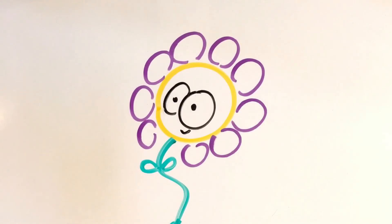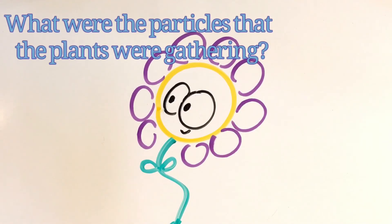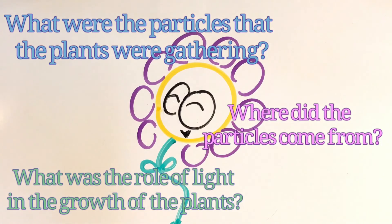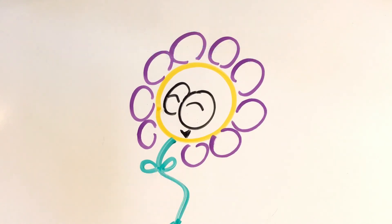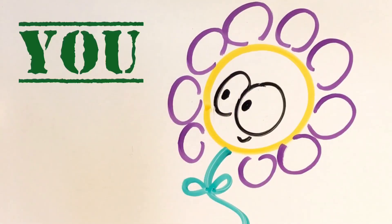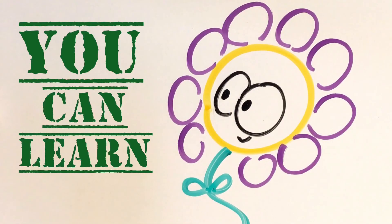Here are a few questions that we came up with. What were the particles that the plants were gathering? Where did these particles come from — the soil, air, water, the light? And what was the role of light in the growth of the plants? Did it help them to gather these particles? We'll explore these other questions in our next video. Until next time, remember — you can learn anything.